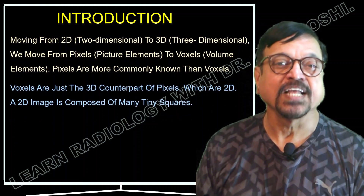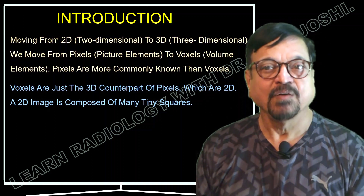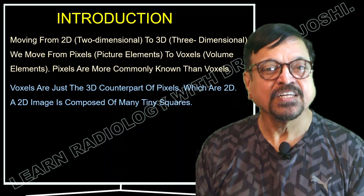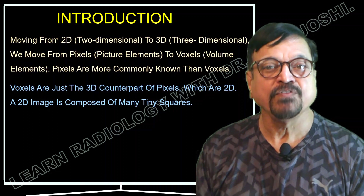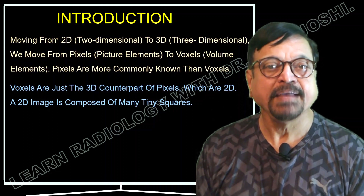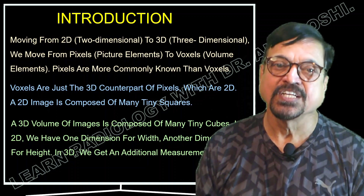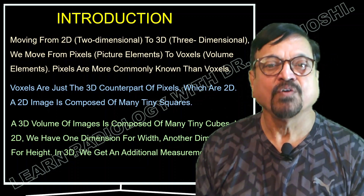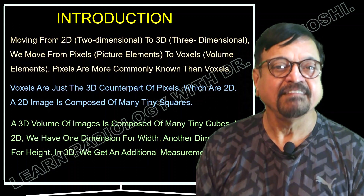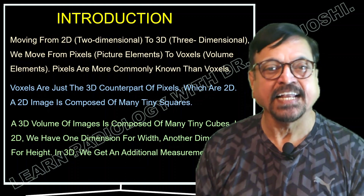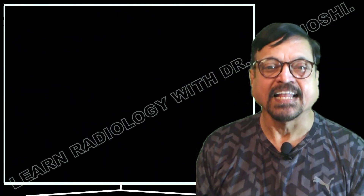Voxels are the 3D counterpart of pixels, which are 2D. So a pixel is 2D versus its counterpart the voxel, which is 3D. A 2D image is composed of many squares, while a 3D volume of the image is composed of many tiny cubicles. In 2D we have one dimension for width, one dimension for height, and another dimension for depth. Length, width, and depth are the three dimensions of 3D, and they form a voxel, whereas length and breadth only form a pixel — that is two-dimensional.